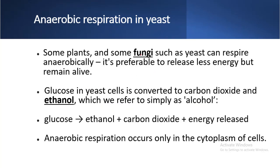Some plants and some fungi — such as yeast — can respire anaerobically. It is preferable to release less energy but remain alive, because without oxygen, the organism can survive on anaerobic respiration. Glucose in the yeast is converted to carbon dioxide and ethanol, which we refer to as alcohol. This anaerobic respiration occurs in the cytoplasm of the cell. That's all about anaerobic respiration and its uses.